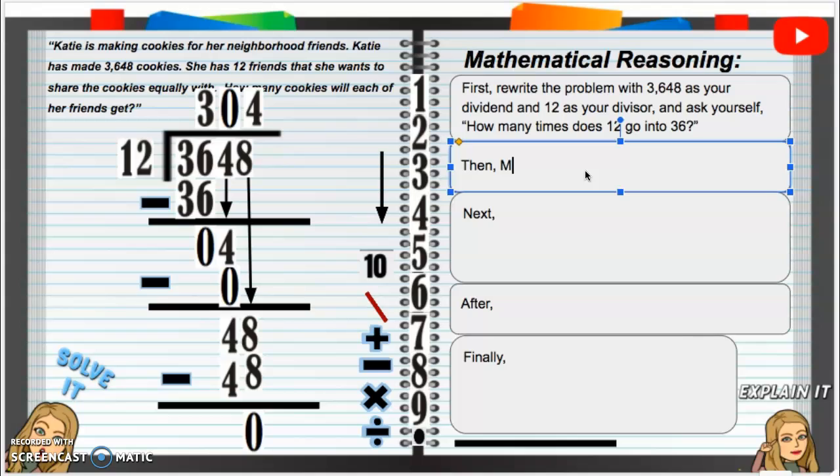Then, well, we've got to multiply. So, then we took that 3 because we knew it went in 3 times. So, then we multiply 12 and 3 to get 36. Then you will find the difference between 36 and 36, which is 0.